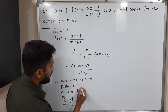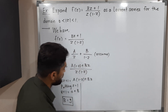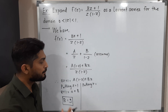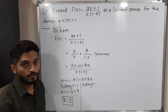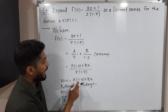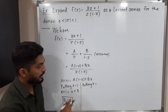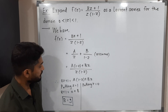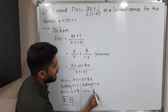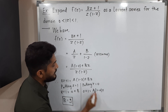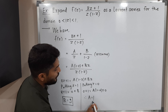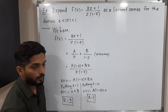Now to find A, we put z = 0. The Bz term vanishes, and we have: 0 + 1 = A(1 - 0) + B(0), so A = 1. We have now found the values of both constants: A = 1 and B = 9.